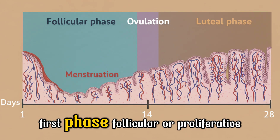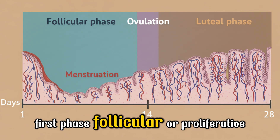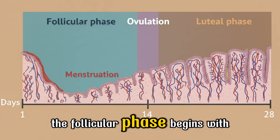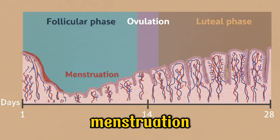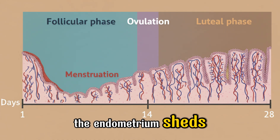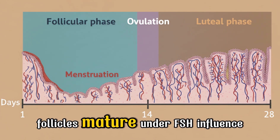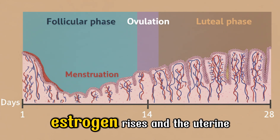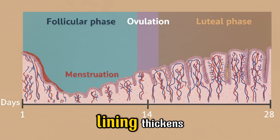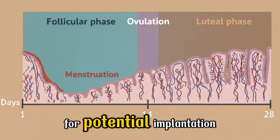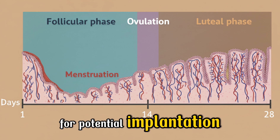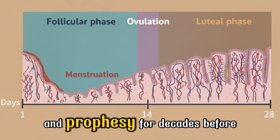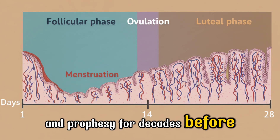The follicular phase begins with menstruation — the endometrium sheds. Follicles mature under FSH influence, estrogen rises, and the uterine lining thickens for potential implantation. Primary oocytes can remain arrested in prophase I for decades before ovulation.